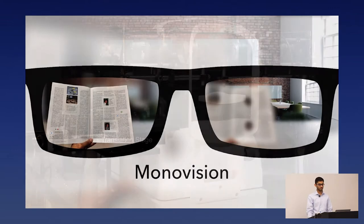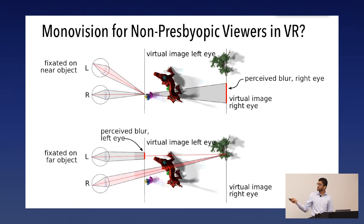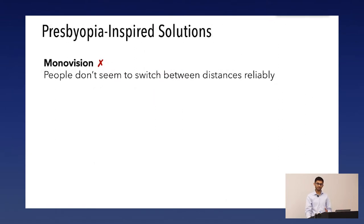For monovision in VR, the idea is to give one eye a close virtual image and the other a far virtual image, hoping the brain automatically switches based on which gives less vergence conflict. Skipping to the punchline: it doesn't work well. In our testing, people tended to pick a distance based on whatever they focused on first and then stay there the entire time.